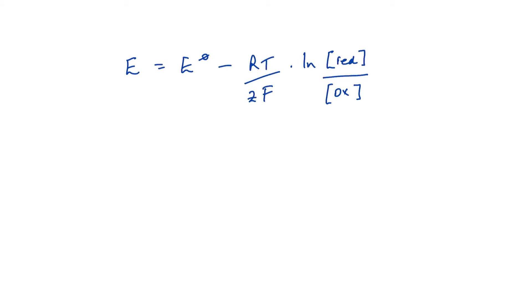So here's my Nernst equation: E equals E° minus RT over zF multiplied by the ln of the concentration of the reduced species over the oxidized species. If that means nothing to you, please go back and check out the previous video.